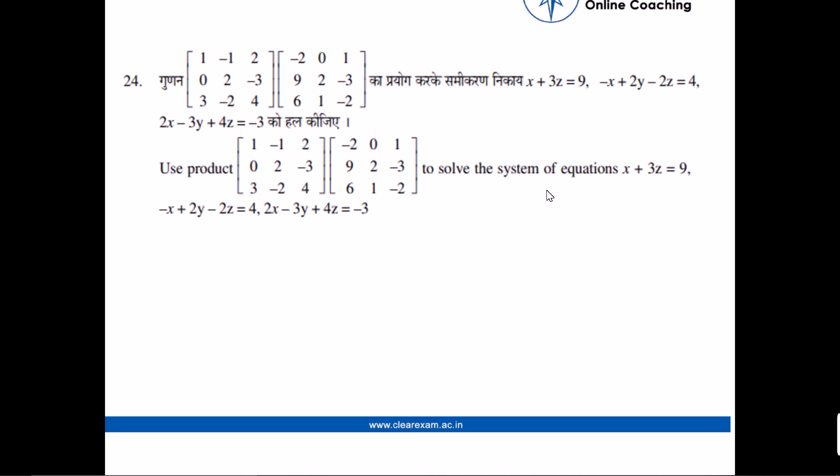To solve the system of equations: x + 3z = 9, -x + 2y - 2z = 4, 2x - 3y + 4z = -3. So we have to use the product of these to solve the equation.